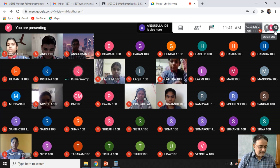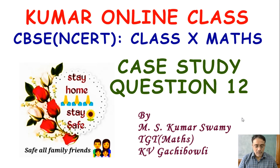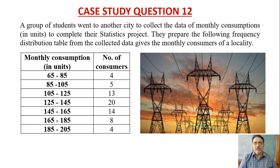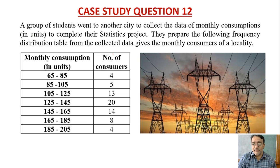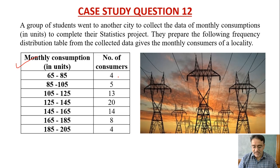Everyone mute your mic now. Let us start case study question number 12. This question I have already given in one of the sample paper tests. A group of students went to another city to collect data of monthly consumption in units to complete their statistics project. They prepared the following distribution table from the collected data, giving the monthly consumption of a locality. Based on this table, a few questions are there that we have to do.